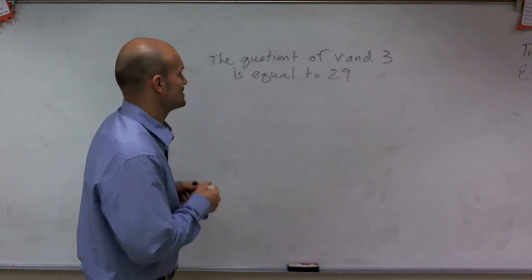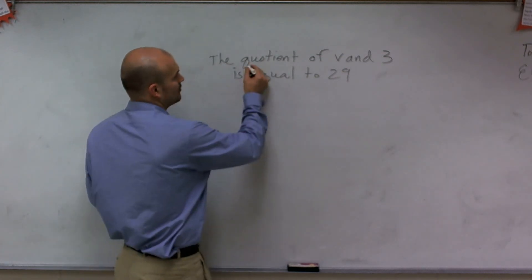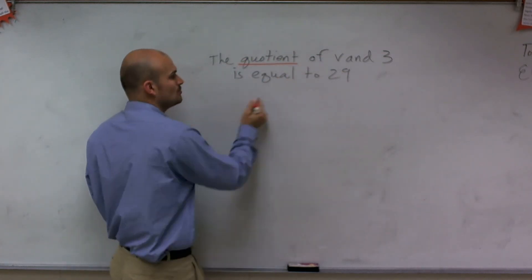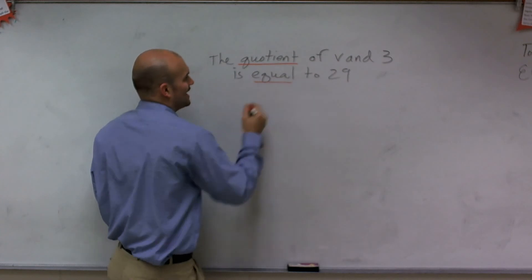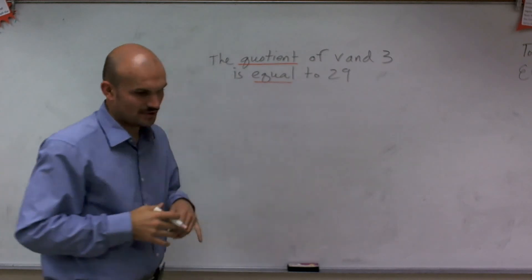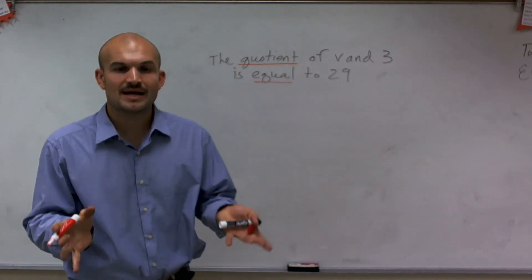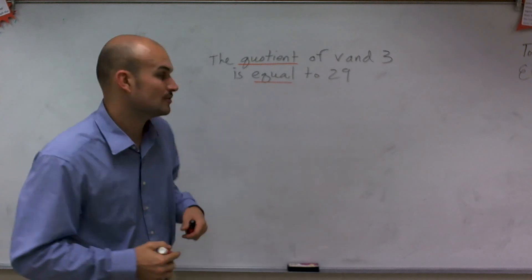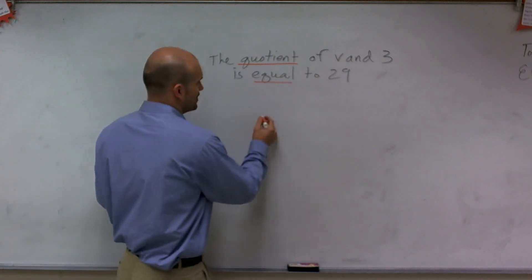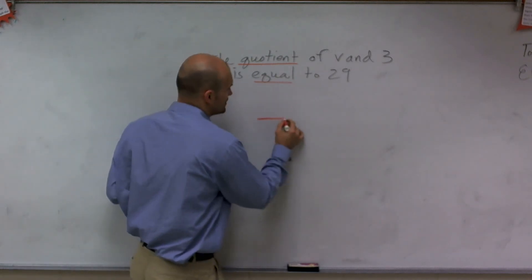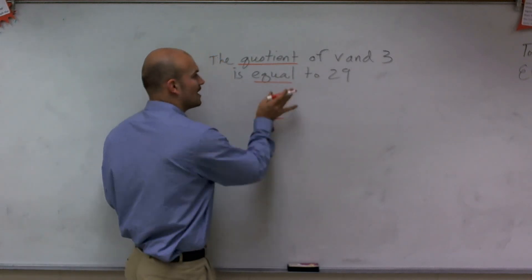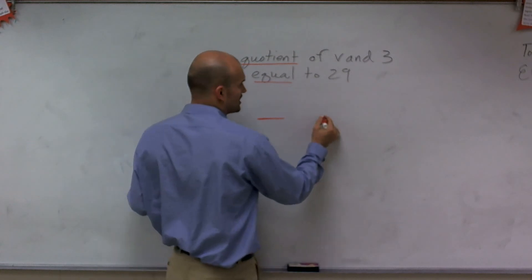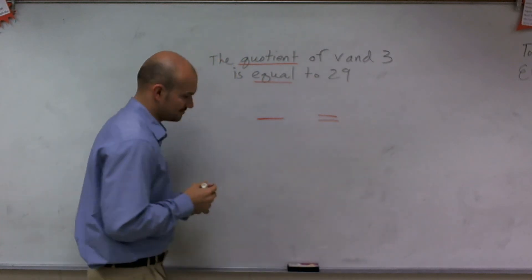The main important thing is I want to underline a couple of important words here. I have 'quotient' and I have 'equal to.' Now, when I read 'quotient,' the main important thing that tells me is that division is going on. So therefore, I'm going to have a division symbol. And 'equal to' is going to tell me I'm going to have an equation.